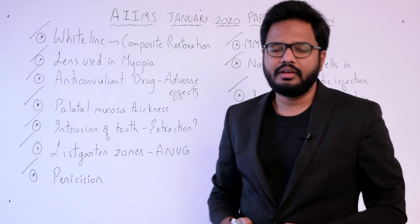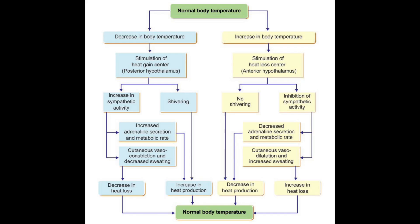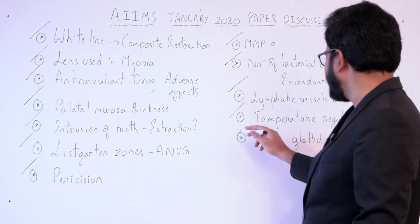Temperature regulation occurs in the hypothalamus. The hypothalamus sets the normal range of body temperature; under physiological conditions the set point is 37 degrees centigrade. The hypothalamus has two centers: a heat loss center and a heat gain center.